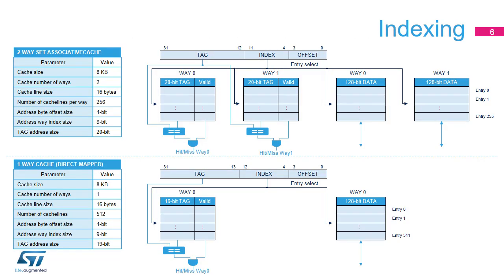This slide details the cache organization in the two possible configurations: two-way set associative and direct mapped. In two-way set associative mode, each way contains 256 lines of 16 bytes. Thus, the 4 LSBs of the address represent an offset within a cache line, and the 8-bit index selects one entry among 256 in the tag memories and in the data memories. In direct mapped mode, the unique way contains 512 lines of 16 bytes, so the index has one additional bit. All cache operations such as read, refill, remapping, and invalidation remain the same in direct mapped configuration. The only difference is the absence of a replacement algorithm in the case of a line eviction, since only one way is possible for any data refill.